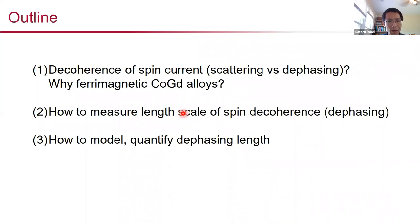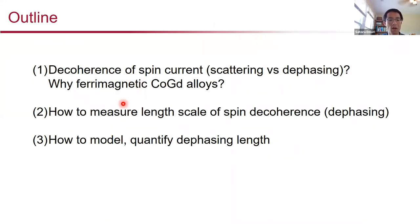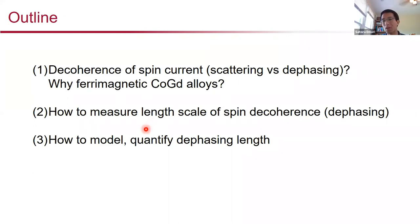Here's a quick outline of what I'm going to be talking about for the next 40 minutes or so. First, I'll provide background information about how a spin current undergoes decoherence and why we have opted to use ferrimagnetic alloys of cobalt-gadolinium as the model system. I'll then talk about our experimental results measuring the length scale associated with spin dephasing in a series of cobalt-gadolinium alloys. Finally, I'll conclude by talking about the model we use to quantify the dephasing length while capturing the relevant physics.